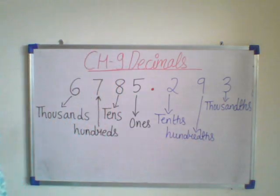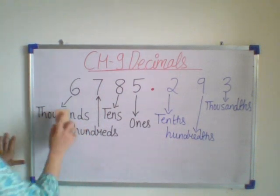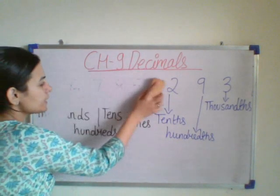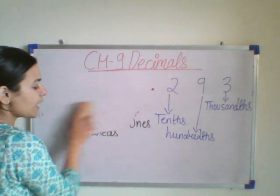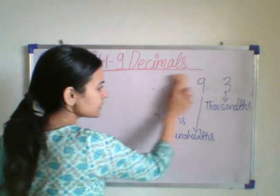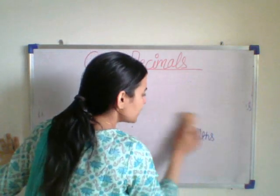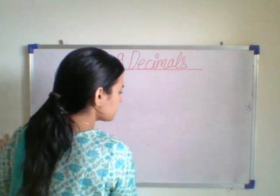Now, how to do the addition of decimals? It is similar to what we do for whole numbers. We just have to line up the decimal points.